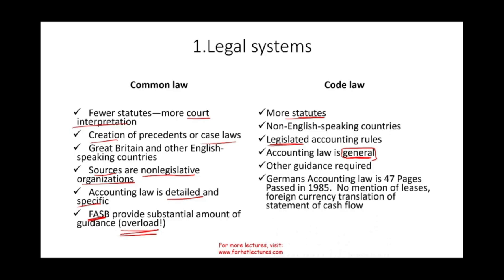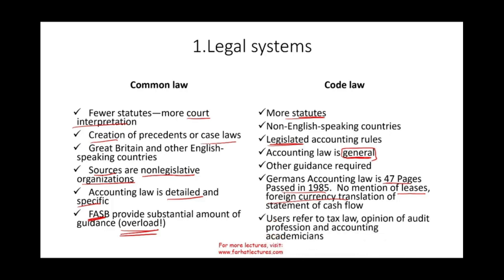FASB in the US provides a substantial amount of guidance — sometimes it's overload. For example, the German accounting law is only 47 pages, passed in 1985, whereas FASB's revenue recognition guidance alone is over 200 pages. German accounting law does not mention leases, foreign currency translation, or statement of cash flows. So you look for other guidance: tax law, opinions of audit professionals, accountants, academicians, and industry experts.